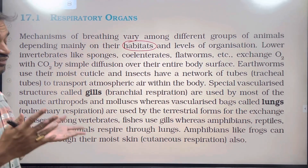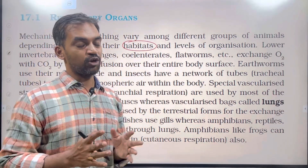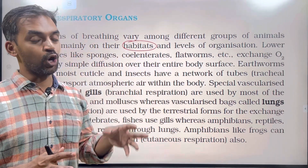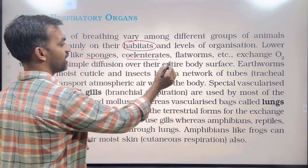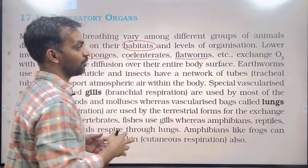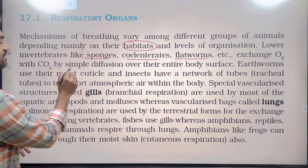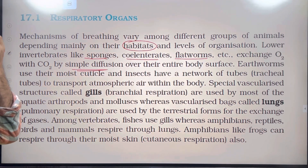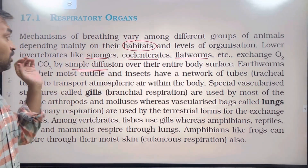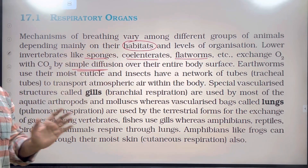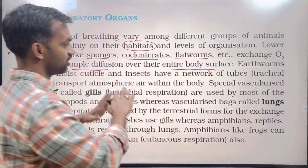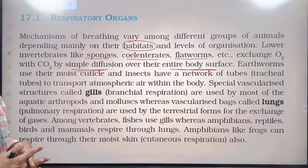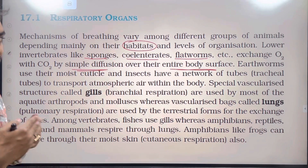Levels of organization include simple, complex, cellular level, tissue level, organ level, and organ system level. Lower invertebrates like sponges, coelenterates, and flatworms exchange oxygen with carbon dioxide by simple diffusion over their entire body surface.